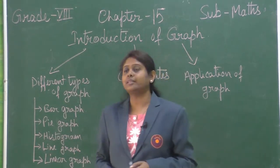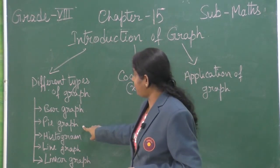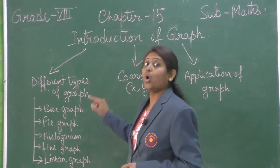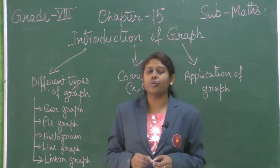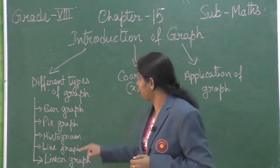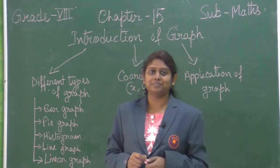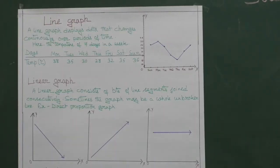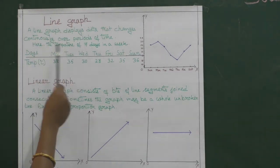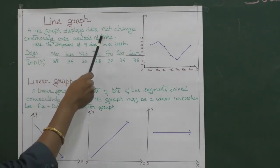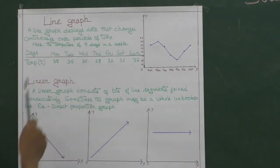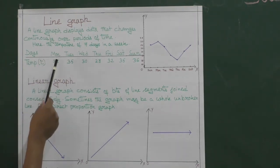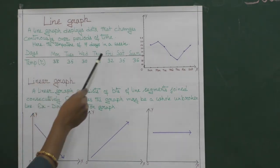Let me tell you one thing. In this chapter, bar graph, pie graph, and histogram we already learned in chapter number 5, Data Handling. So we will start our summary video from line graph. Line graph: the graph displays data that changes continuously over periods of time. Here we have taken data from one week, the temperature of seven days in a week.